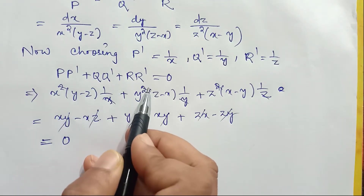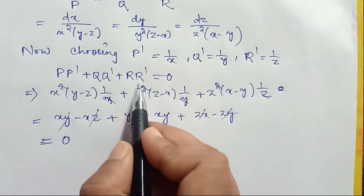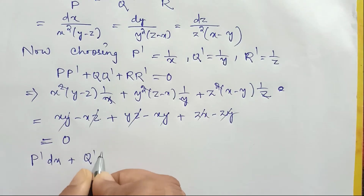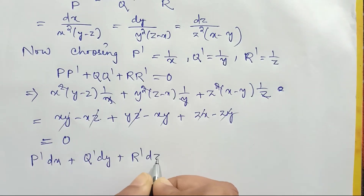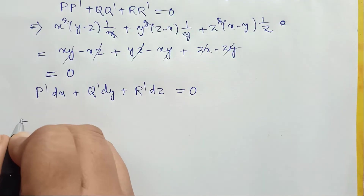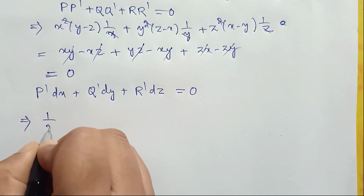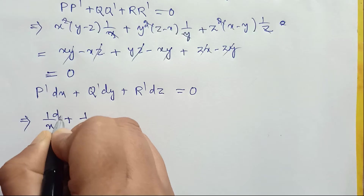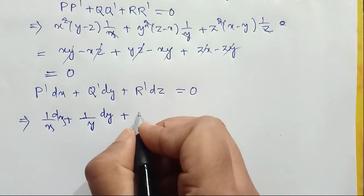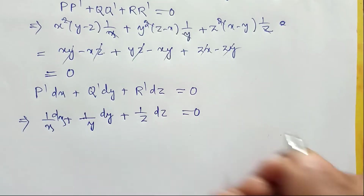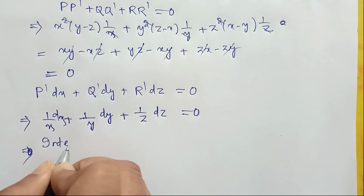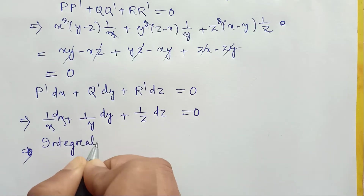Since P·p' + Q·q' + R·r' = 0, it follows that p'dx + q'dy + r'dz = 0, that is (1/x)dx + (1/y)dy + (1/z)dz = 0. Integrating both sides: